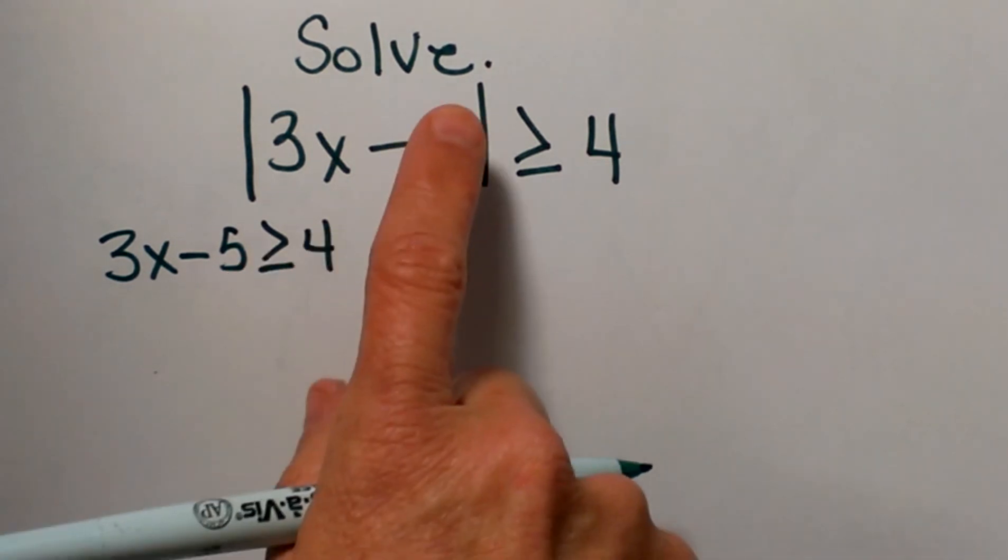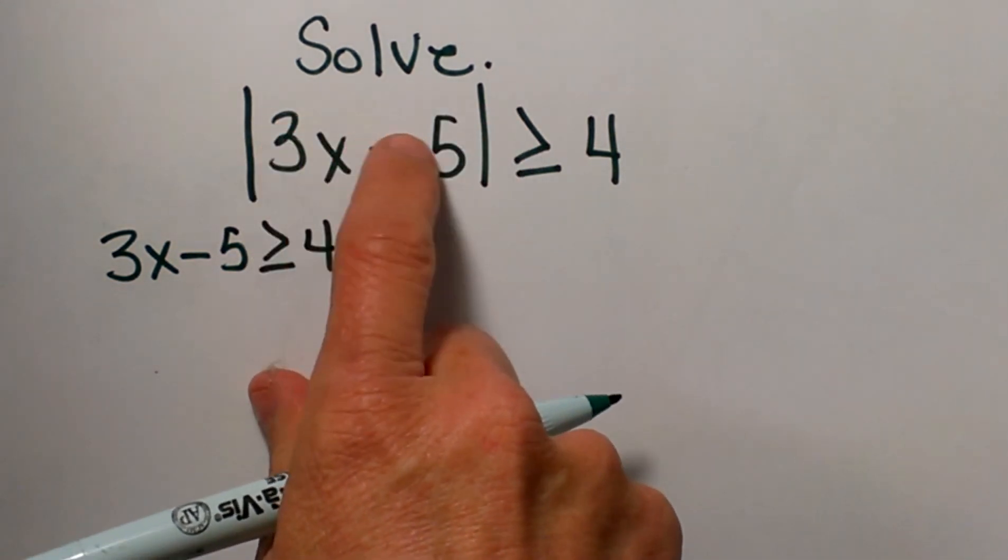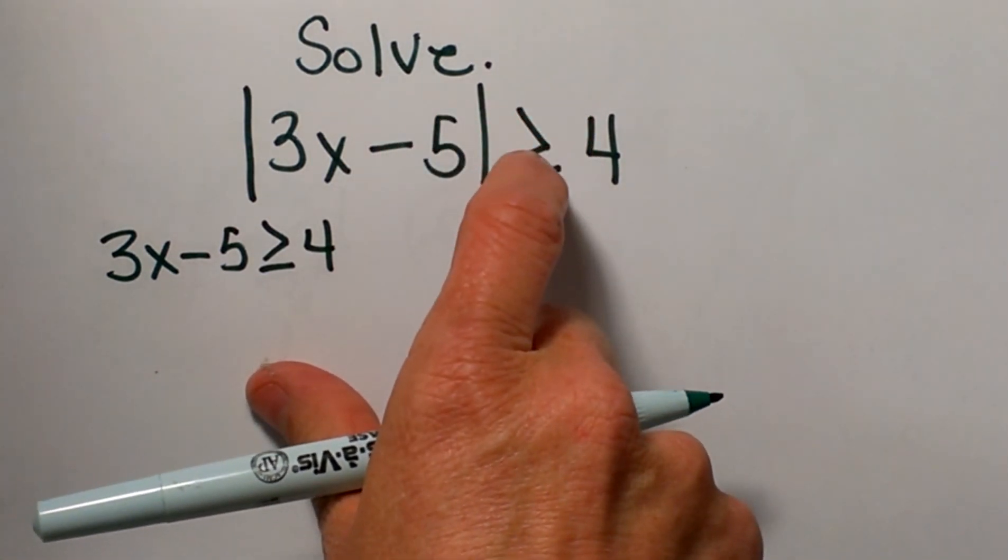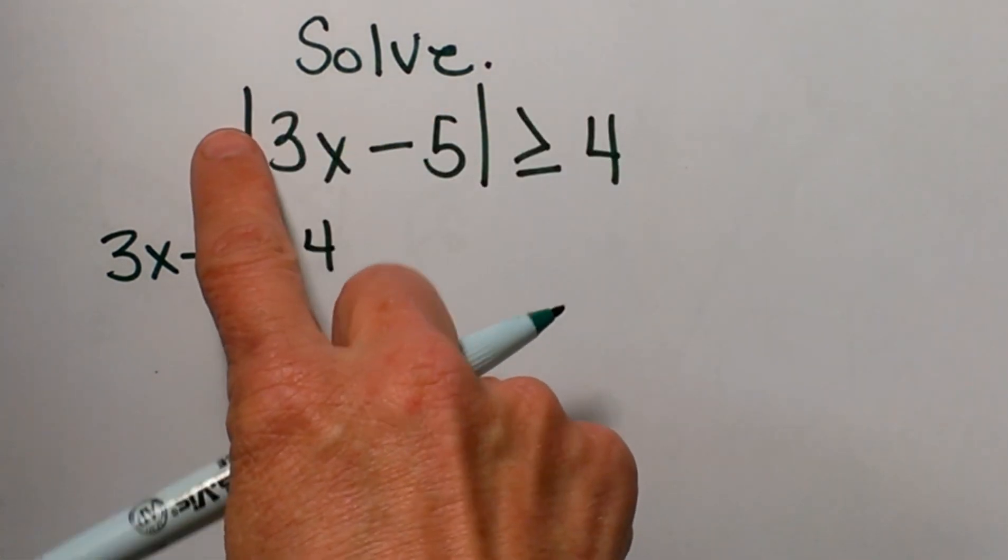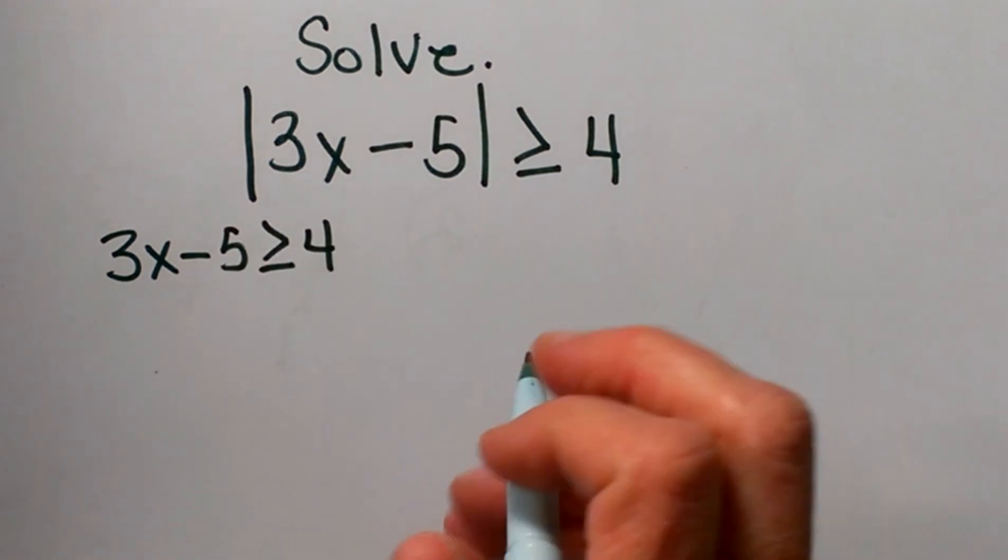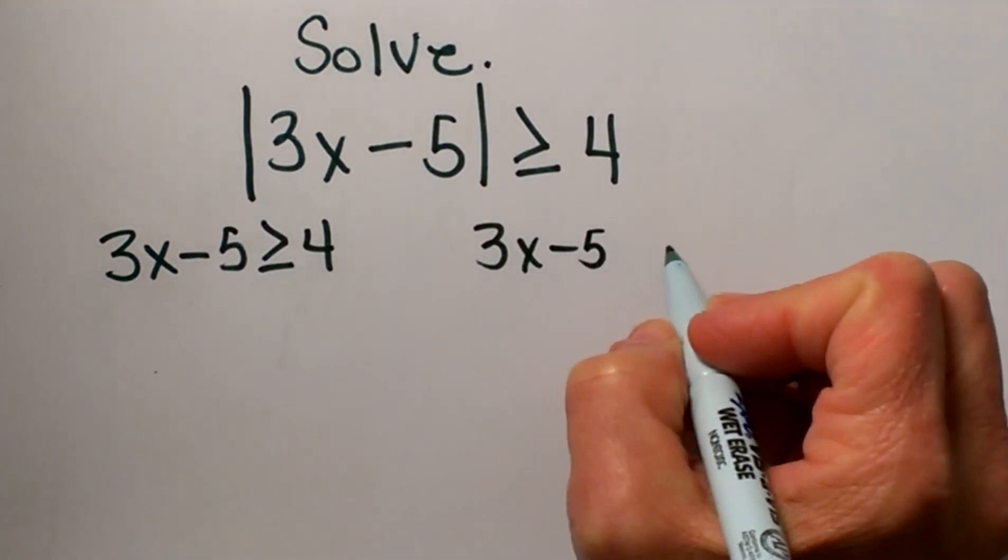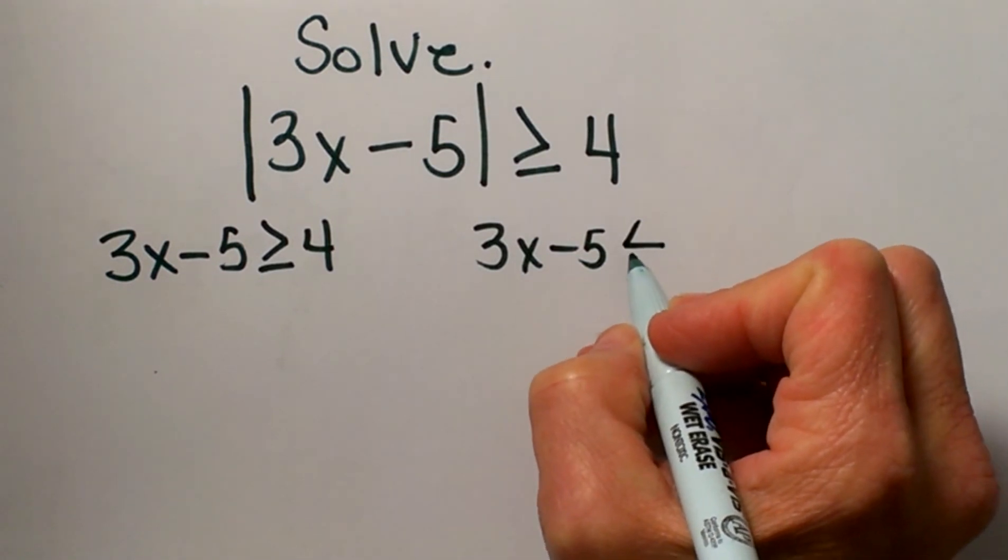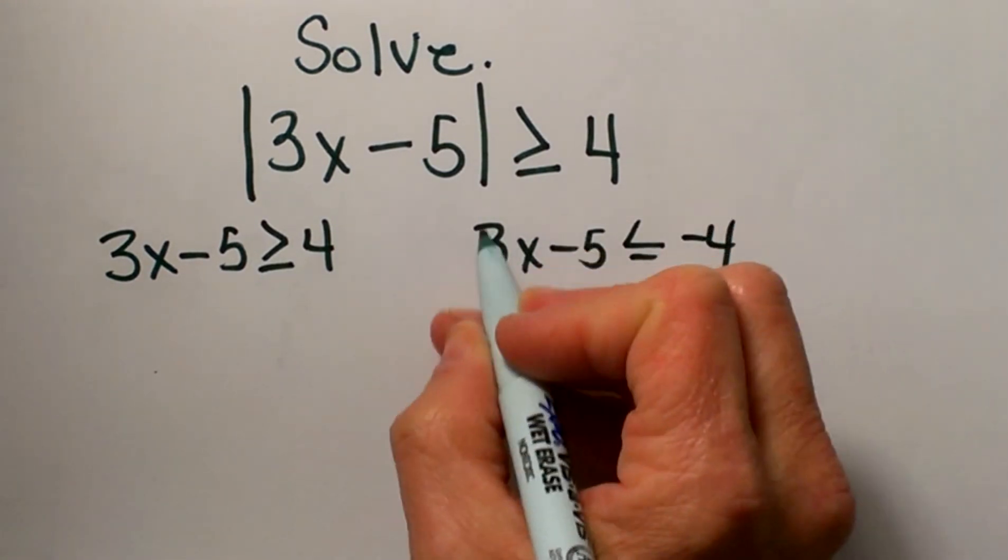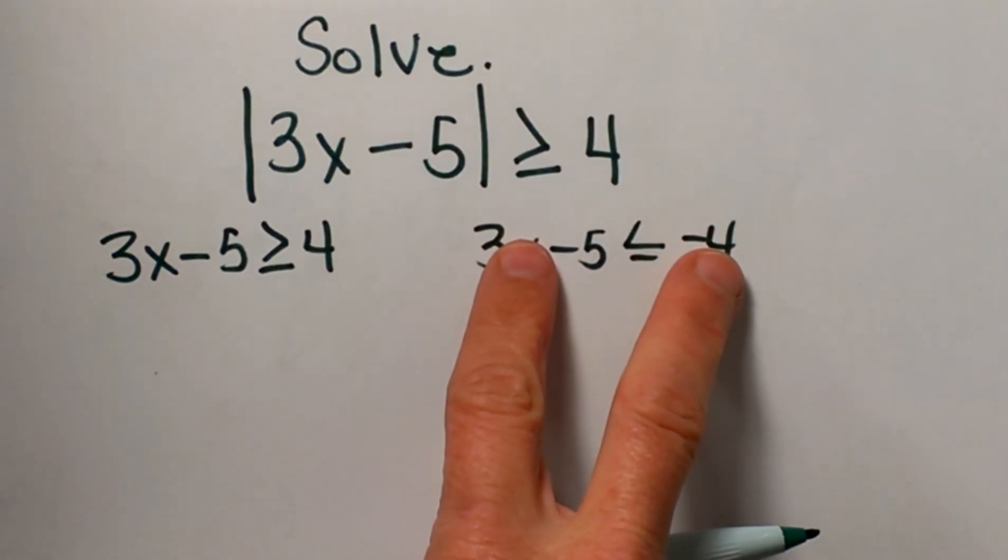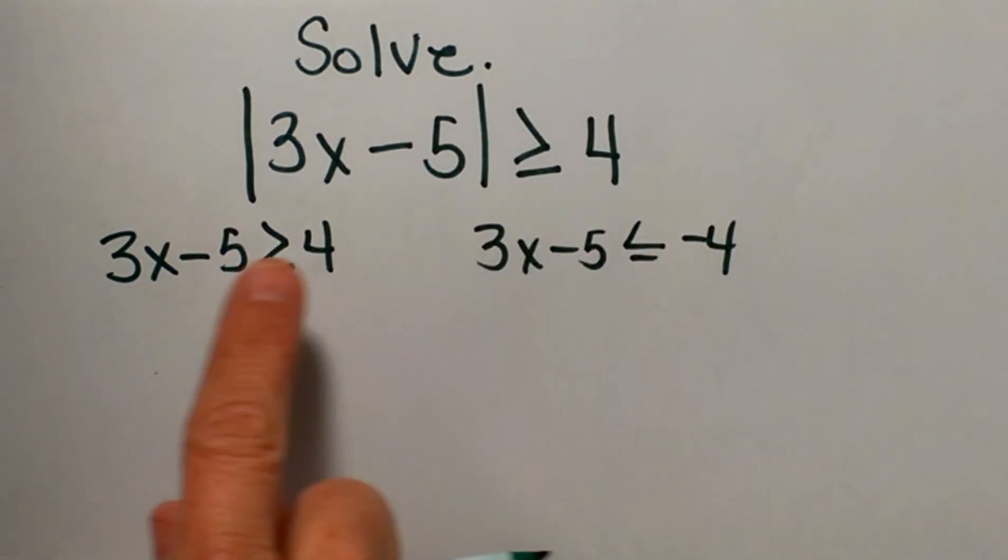For case 2, I'm going to think about what if this was the absolute value of negative 5. Well, that would still be greater than 4 because absolute value is always positive. So what if this is all less than or equal to negative 4, like negative 5 or negative 6, because once I take the absolute value it's going to be positive. So I have to look at my two cases.